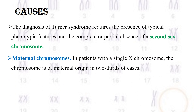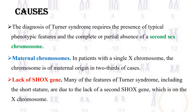Regarding maternal chromosomes: in patients with a single X chromosome, the chromosome is of maternal origin in one-third of cases. Regarding the lack of the SHOX gene: many of the features of Turner syndrome, including short stature, are due to the lack of a second SHOX gene, which is located on the X chromosome.